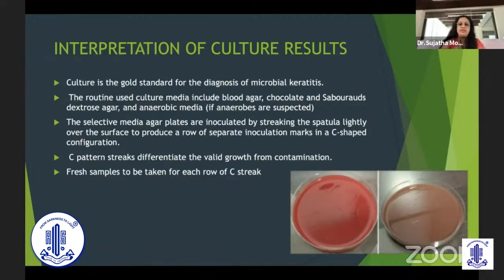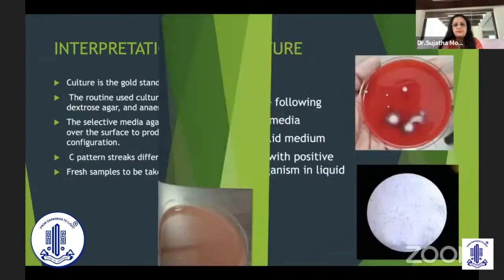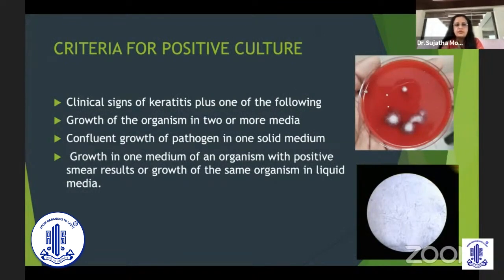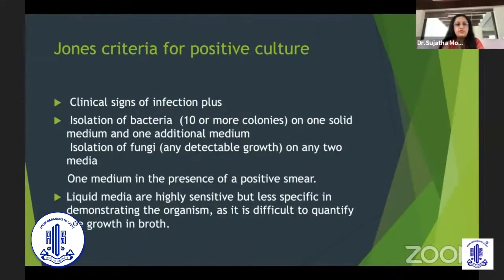Criteria for positive culture include clinical signs of keratitis with growth of organism in one or two media, confluent growth of the same pathogen in just one solid medium, or growth in both liquid and solid media. The Jones criteria for positive culture indicates clinical infection with isolation of bacteria showing 10 or more colonies in one solid medium plus an additional medium, isolation of fungi on any two media, and one medium in the presence of a positive smear. Liquid media are highly sensitive but less specific as it's very difficult to quantify growth.